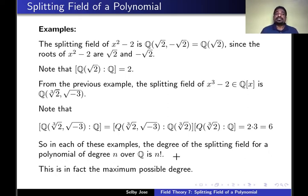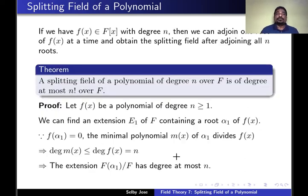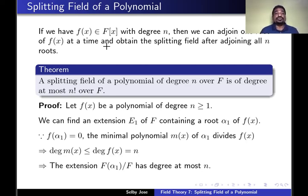In these examples, the degree of the splitting field for a polynomial of degree n over Q equals exactly n!. But this is only the maximum possible degree. The next theorem states that the splitting field of a polynomial of degree n over f has degree at most n! over f.